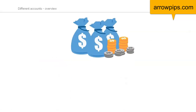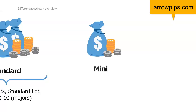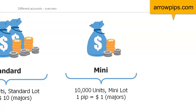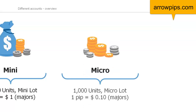There are three types of position sizes that you can choose from. A standard lot, equal to 100,000 units of currency, where each pip is worth $10. A mini lot, equal to 10,000 units of currency, where each pip is worth $1. And a micro lot, equal to 1,000 units of currency, where each pip is worth $0.10.